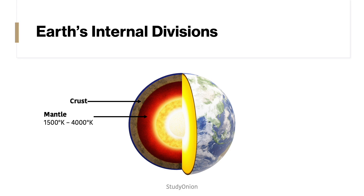After the crust comes the mantle. This is a silicate shell which has a thickness of around 2,900 kilometres, making up around 80% of the Earth's volume. The lower mantle, also known as the asthenosphere, is solid, whereas the upper mantle, or lithosphere, is semi-molten, which allows convection currents to rise and fall.